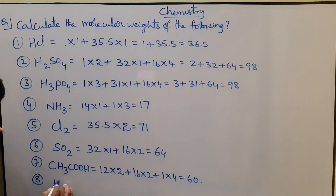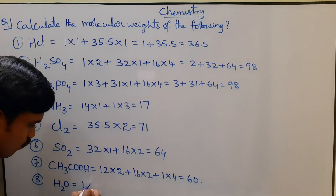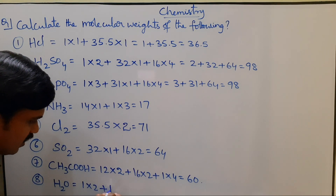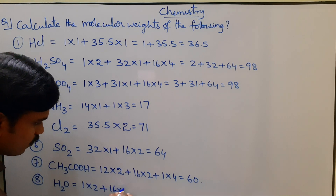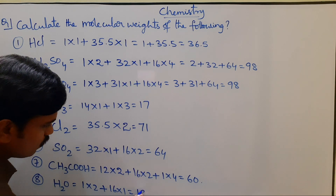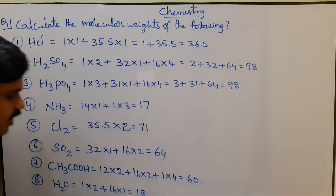Water, chemical formula H2O. Hydrogen: 1 × 2, plus Oxygen atomic weight 16 × 1, equals 18.